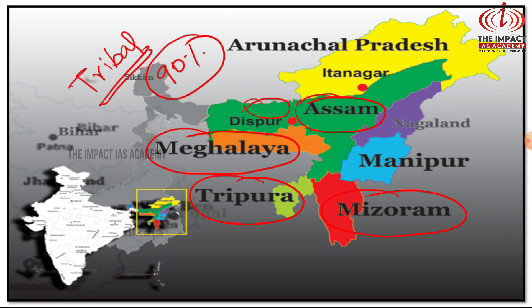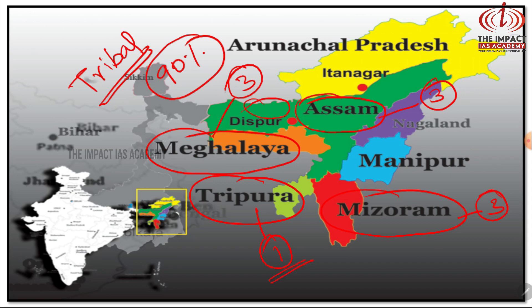Assam has 3 districts under the Sixth Schedule areas. Mizoram and Meghalaya also have areas covered. In total, presently there are 10 areas under the Sixth Schedule of our Constitution.